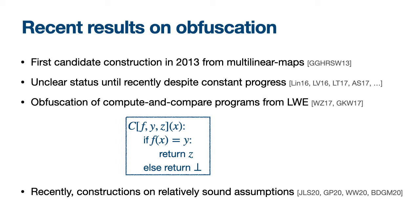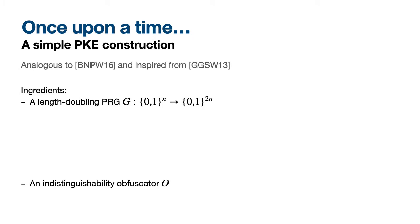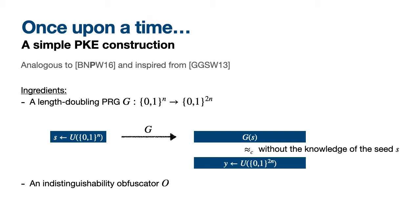Let's jump into the construction in the paper. The starting point is a simple PKE construction analogous to one from a 2016 paper, inspired by the witness-encryption-based construction of public key encryption by Garg et al. in 2013. The ingredients are a length-doubling PRG and an indistinguishability obfuscator. A PRG takes as input a uniformly random string of length n and, if length-doubling, outputs a string of length 2n that is computationally indistinguishable from a truly random string of length 2n.